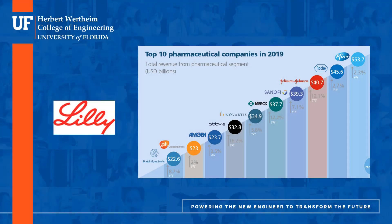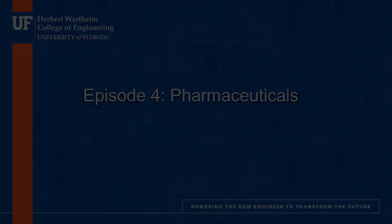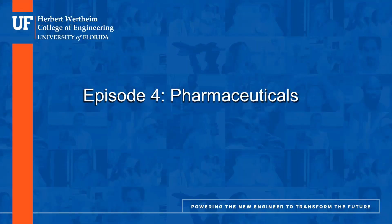Some companies in the pharmaceutical space include Pfizer, Roche, Johnson & Johnson, Merck, Amgen, and Eli Lilly, among many others. There are tons of small biotech companies in this space as well, all looking to hire chemical engineers. That concludes this episode — thanks for watching.